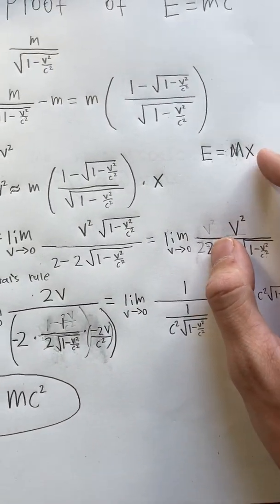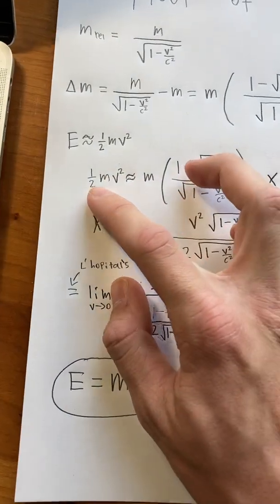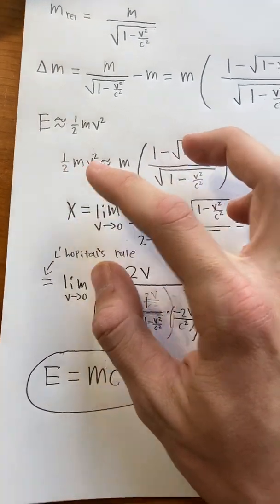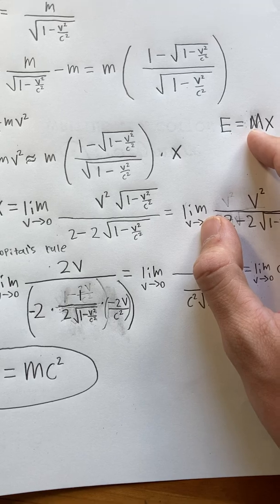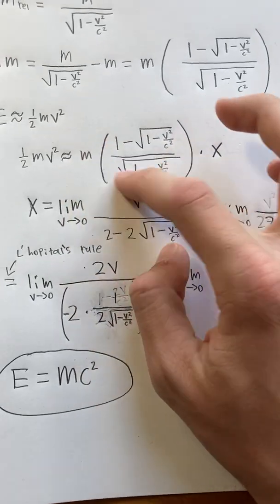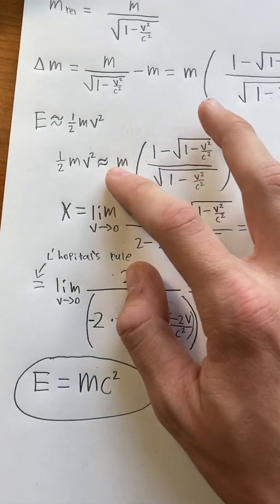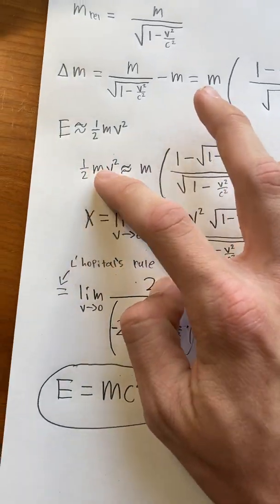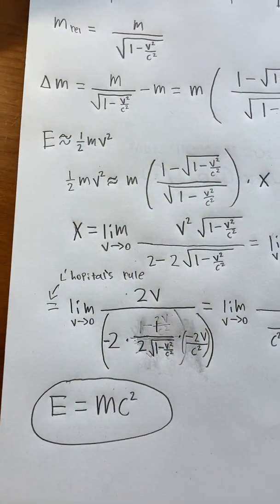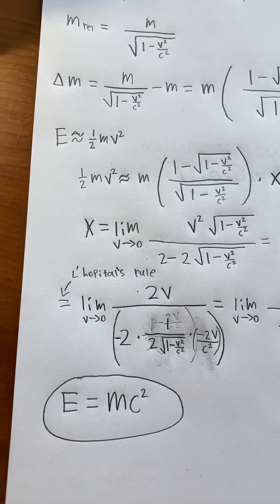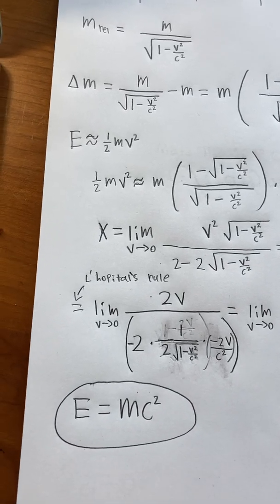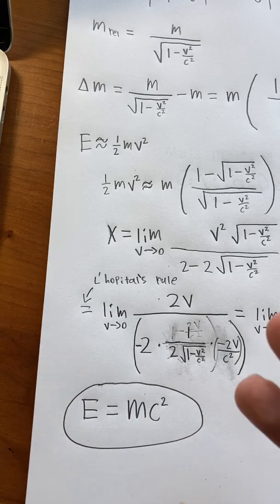So what we can do is we can write E, well, we know E equals 1 half mv squared, and then our mass change is equal to this thing from over here, and then times x. And remember, this is an approximation because this side isn't completely valid, but it will become more accurate as v approaches 0 because Newtonian physics works better at slower speeds.